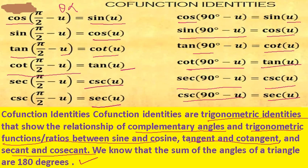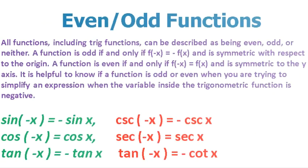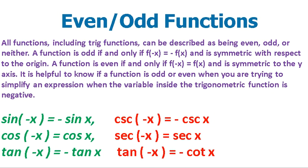Next: even and odd functions. All functions including trigonometric functions can be described as being even, odd, or neither. A function is odd if and only if f(−x) = −f(x) and is symmetric with respect to the origin. A function is even if and only if f(−x) = f(x) and is symmetric to the y-axis. It is helpful to know if a function is odd or even when you are trying to simplify an expression when the variable inside the trigonometric function is negative.